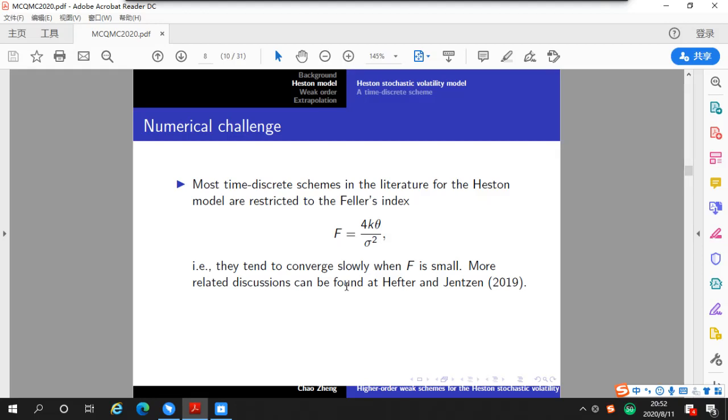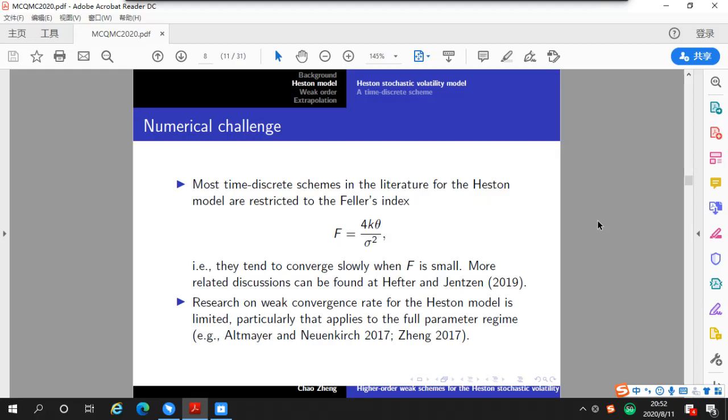The recent paper by Hefter and Jentzen suggests that the Euler-Maruyama method with equal distance step size would converge slowly when applied to the variance process. Hence, it is intuitively reasonable to believe that the Heston model would suffer the same problem because the variance process is one component of the Heston model. On the other hand, research on the weak convergence rate for the Heston model is quite limited, particularly applied to the full parameter range.